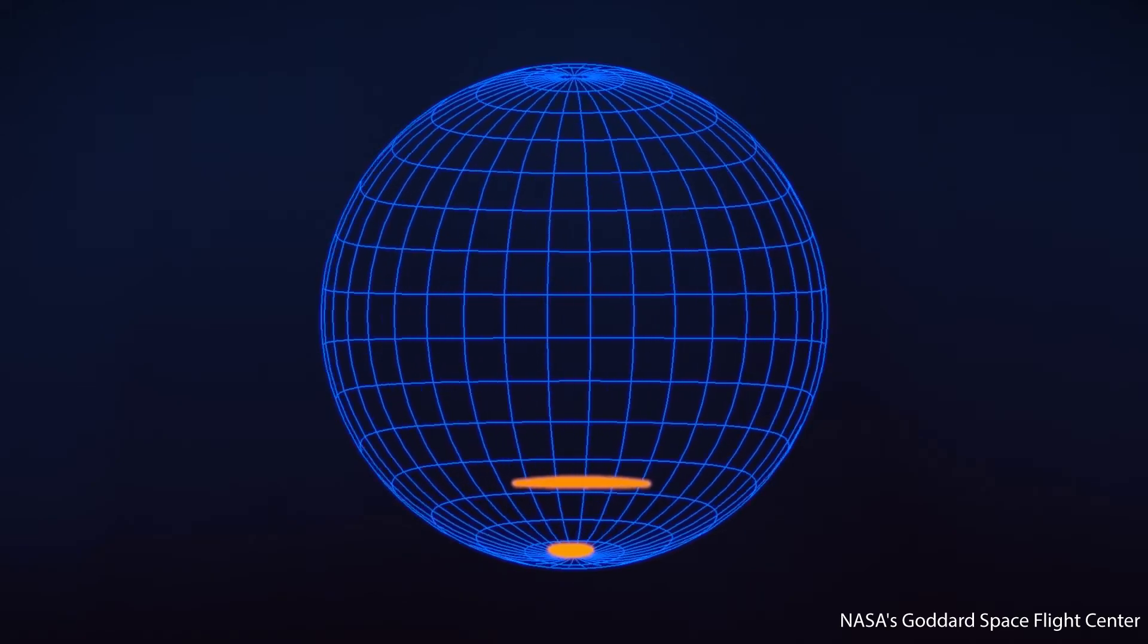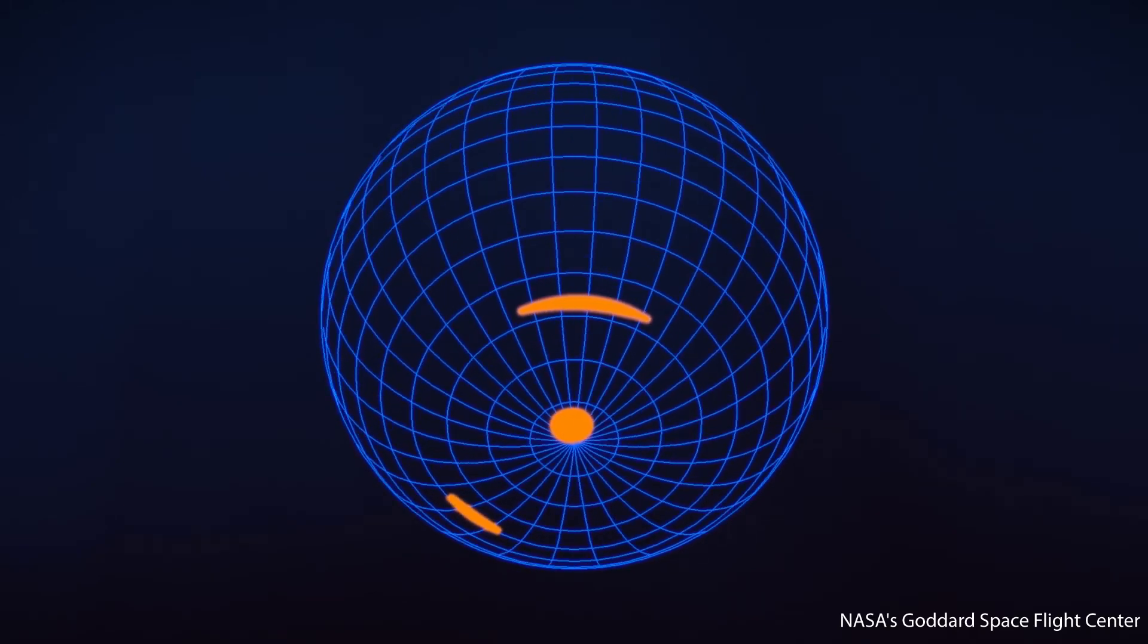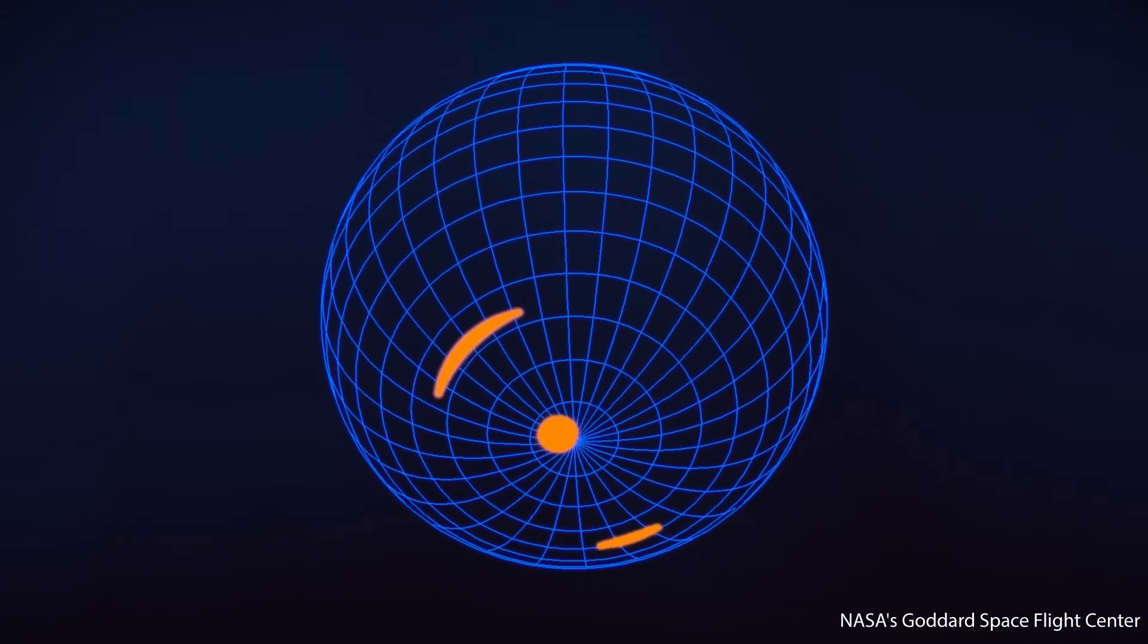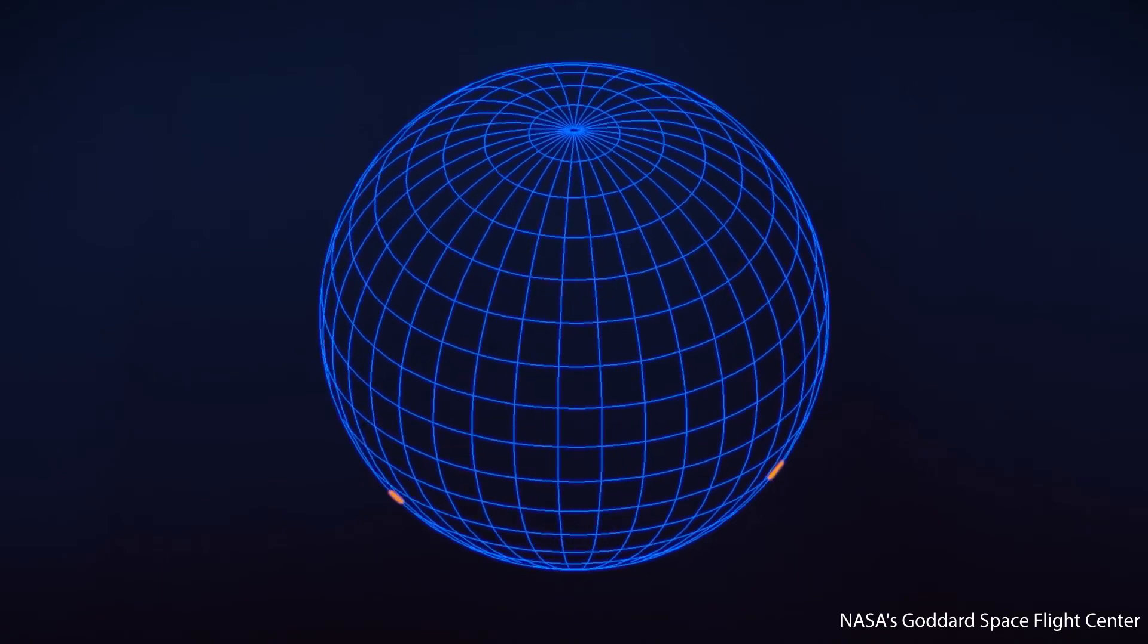NASA did simulations of these hotspots, which you can see right now. We can also see that hotspots are not all circular, but some are crescent-shaped, which is in itself unusual.